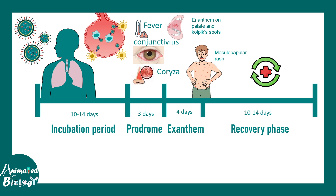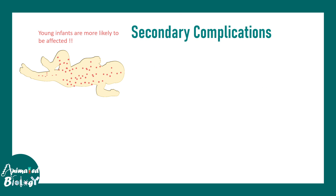Using this principle of lifelong immunity, the vaccine used to prevent measles is a live attenuated vaccine. During the prodrome and exanthem phases, the virus is highly contagious.